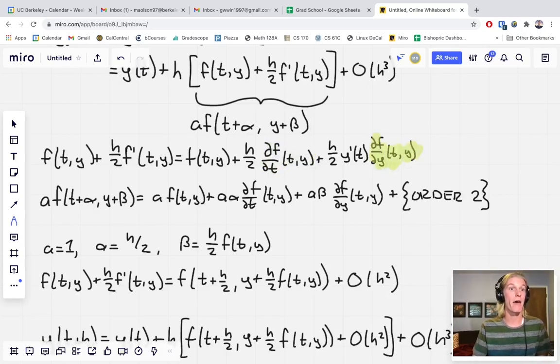but keeping in mind that y itself is a function of t. So we end up with a y prime of t term here as well. And then these h over twos, they just distribute in as you would expect.